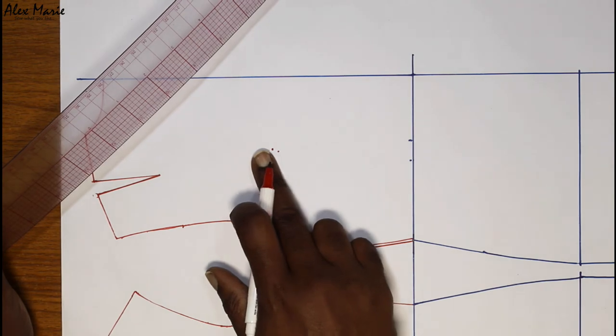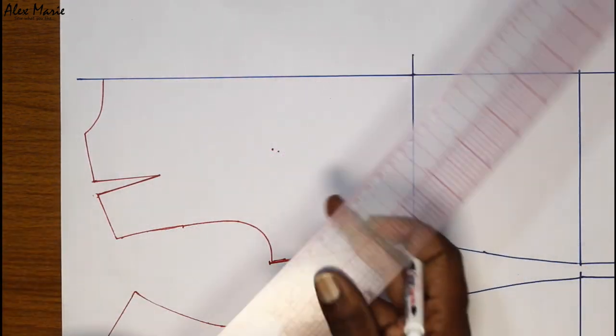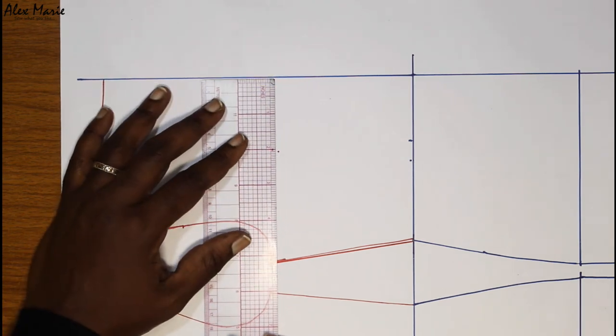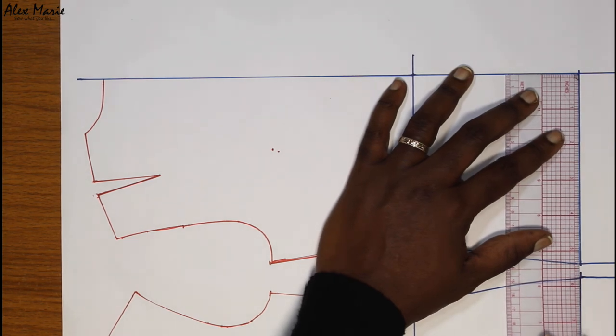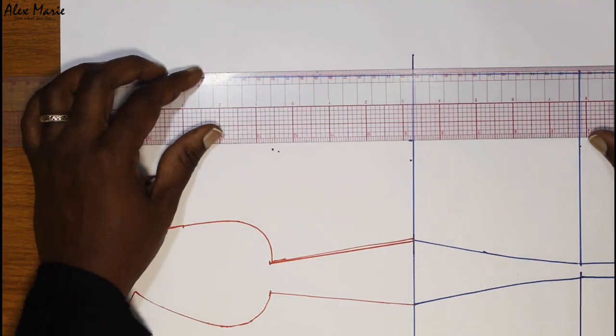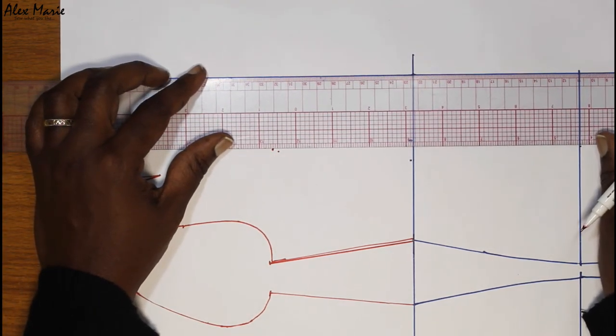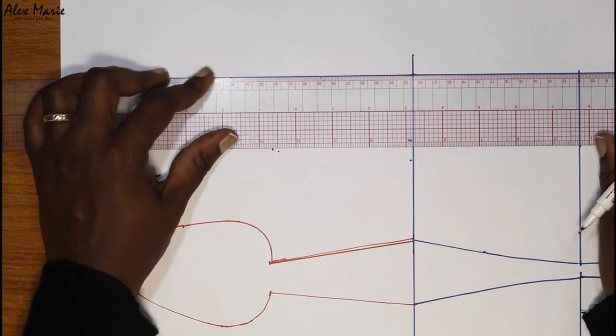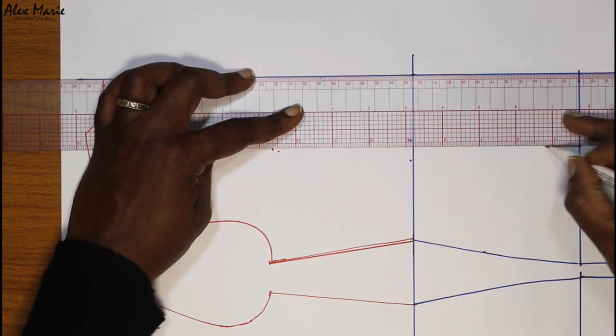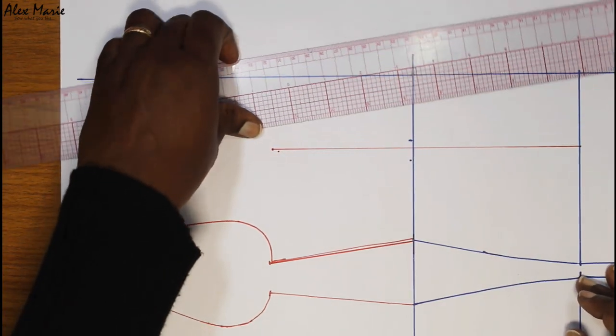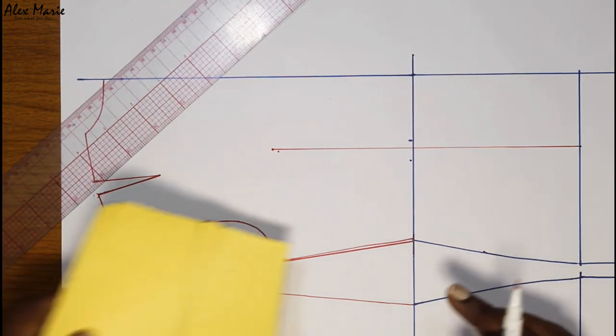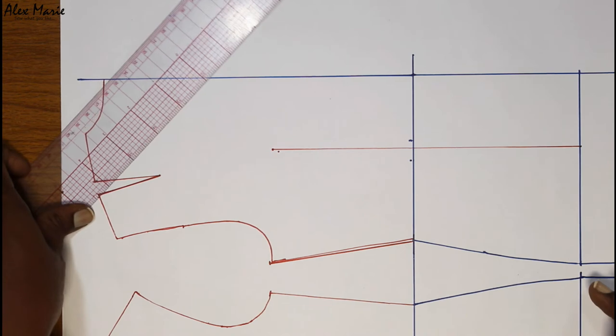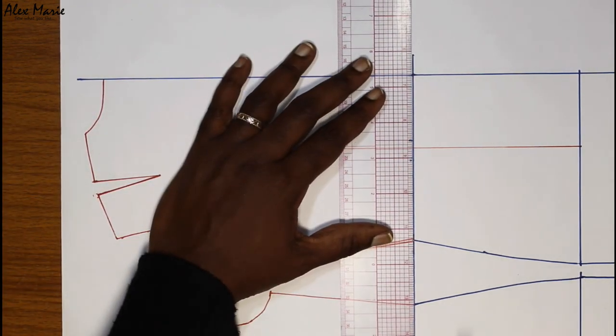We have our peak. We're going to square down like we did previously. And just check the measurement. Two and an eighth. Two and an eighth. Okay. And then, we're going to put in the original dart measurement. Remember, I noted it down.